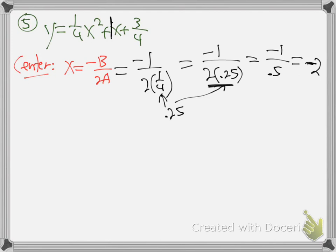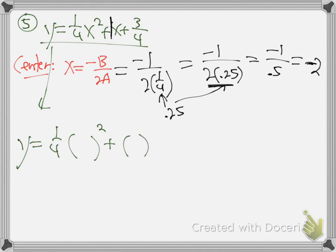X is negative 2 - that's the x value. So where are we at? We have our x value, so I'm going to plug into my y equation now. So bring this down. Y equals - we're doing the worst one right now, this is the hardest it gets in this section. I'm putting the blanks where the x's are, I'm going to plug in negative 2, negative 2.